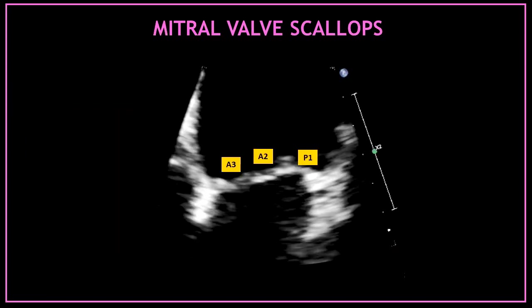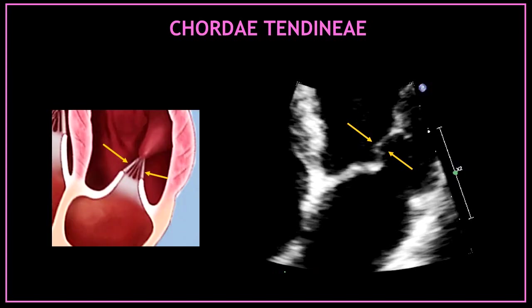In this view we can also identify three of the six mitral valve scallops. From the inferior septum to the lateral wall, we have A3, A2, and P1 mitral valve scallops. You can also visualize the mitral valve cords, which are very thin and fine structures attached from the papillary muscle to the mitral valve leaflets.